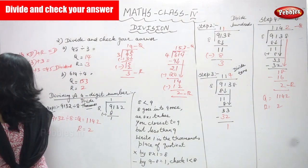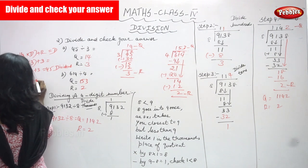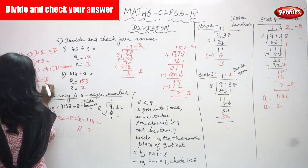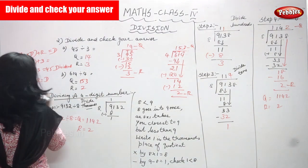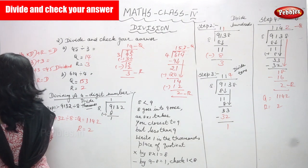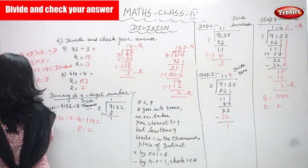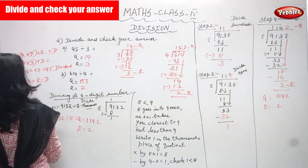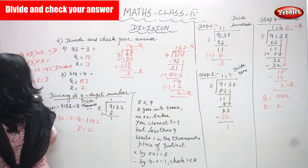The check formula is: quotient into divisor plus remainder gives the dividend. For the second sum, the quotient is 153 and the divisor is 4.